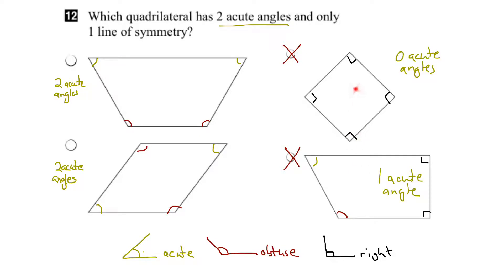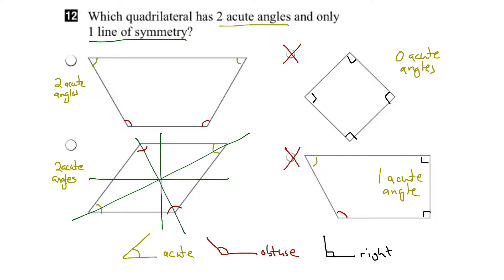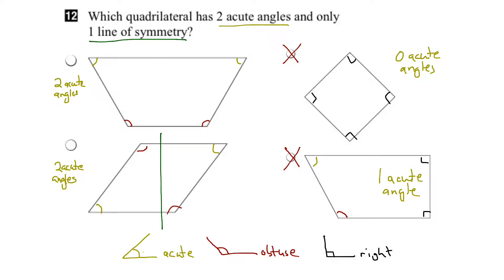Now that we have eliminated those two, let's turn our attention to the remaining two and look for lines of symmetry. When looking for lines of symmetry, we are looking for vertical, horizontal, or diagonal lines. Let's start with vertical lines of symmetry for this shape. If I flip this shape about this vertical line, I'd end up with something that doesn't match up on the other side, so there is no vertical line of symmetry.